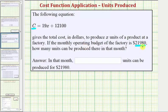Making the substitution gives us the equation 21,980 is equal to 19x plus 12,100.